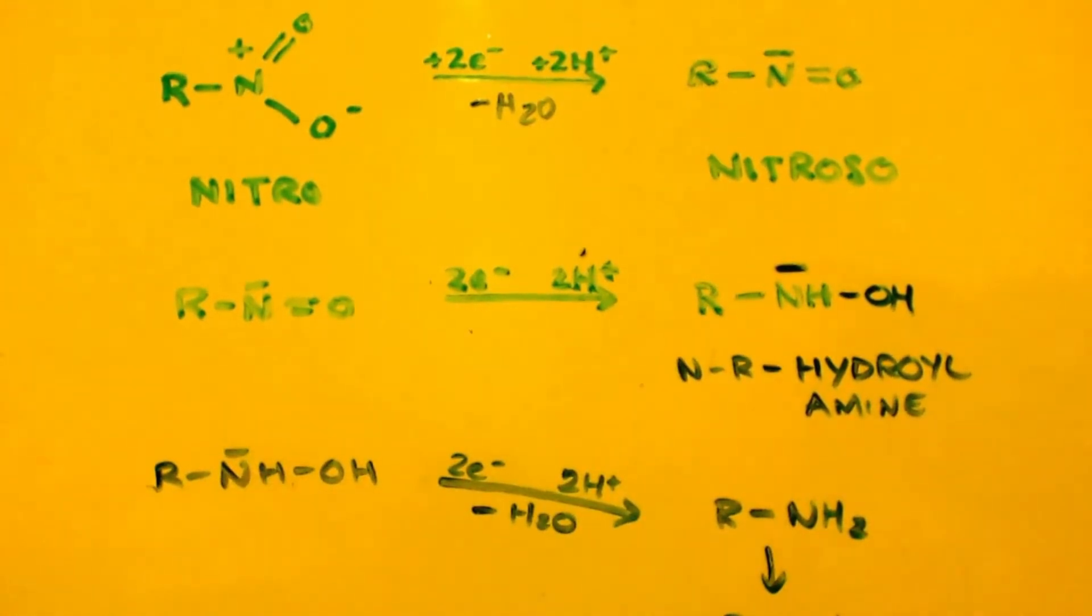Then you take that and basically you do the same thing again. You add two electrons, two protons, and again, like up in the first part, you're going to remove a water molecule. This is your water molecule. You add two hydrogens, two protons. One goes to the amine group, one goes to the water group. The water group leaves and now you have an NH2 here. So now you have your methylamine.